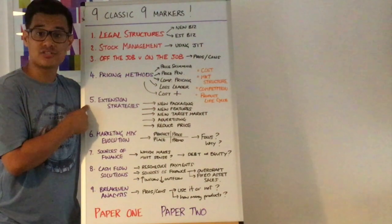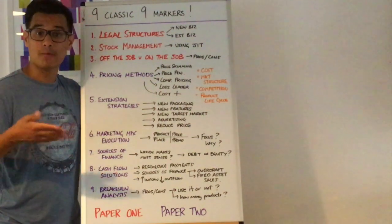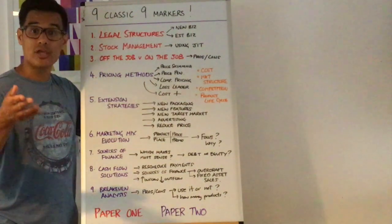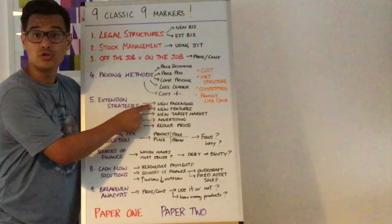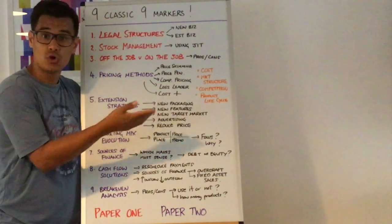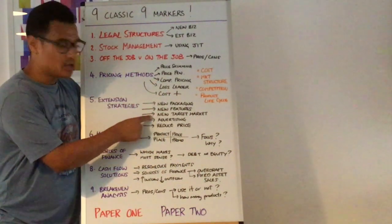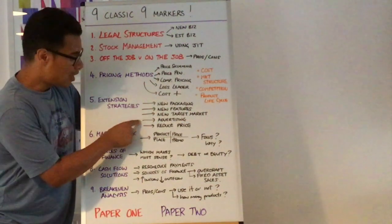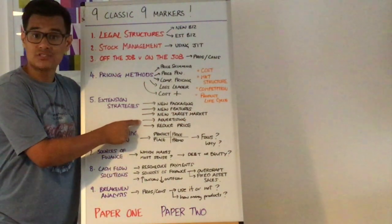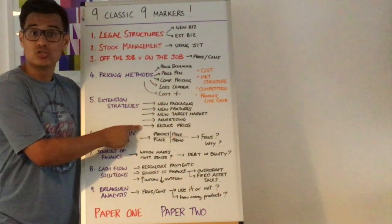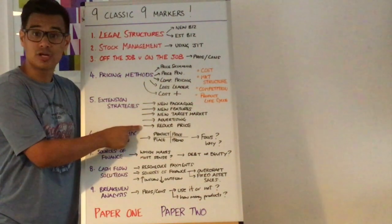Number five is extension strategies, so it will be a question recommend the extension strategies this business should use. You could think about new packaging the firm could do, new features they can add to whatever their product or service is, new target markets that aim at a new demographic for example, advertising a different type of advertising they could do or a different place and potentially they could reduce the price that they currently charge.